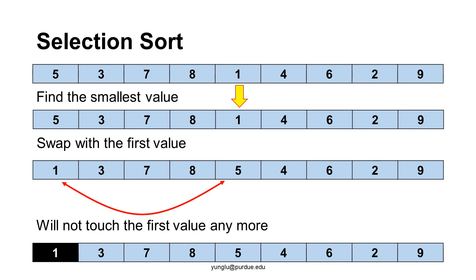This is how the algorithm works. We will go through every element in the array and find the smallest value. If this value is not already the first element in the array, swap this element with the first element.